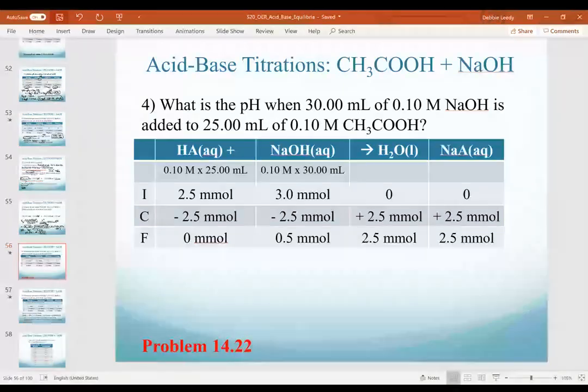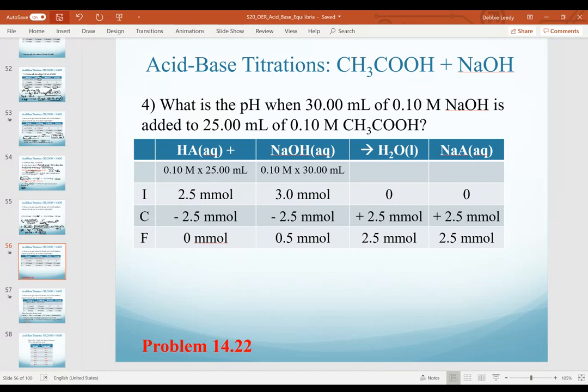We're back to finish our weak acid strong base titration pH calculations. We are now past the equivalence point in region four. Our question for this example is to calculate the pH when 30 milliliters of 0.10 molar sodium hydroxide is added to 25 milliliters of 0.10 molar acetic acid.